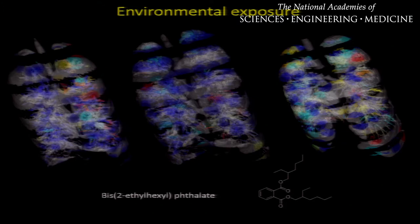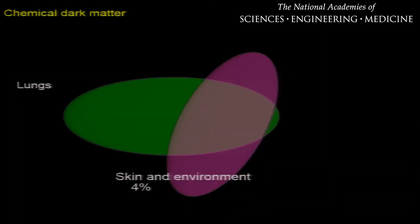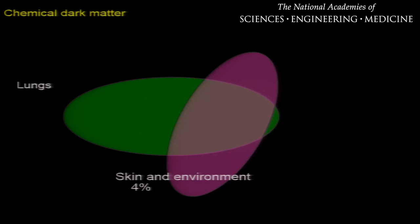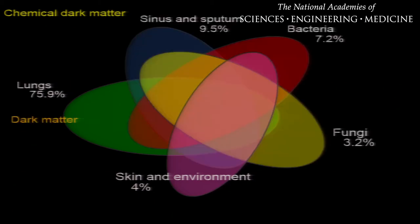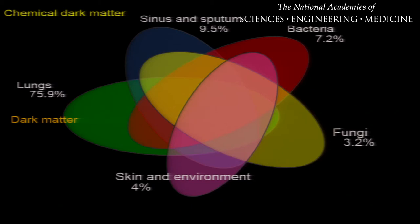When we compare the chemical makeup of these environments, we found that 4% of the molecules in lungs were common to skin. This still leaves a lot of chemical space that we don't know what it is. So we compared other data sets available on our online infrastructure, GNPS, and found that at least 10% of the molecules were common to data sets acquired on sinuses and sputums, at least 7% were common to bacteria, and 3% to fungal data sets. This still leaves us with a lot of chemical space that represents dark matter.